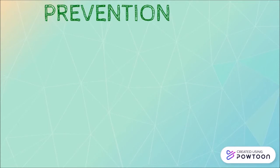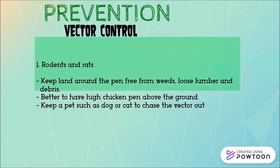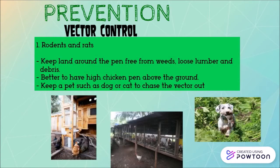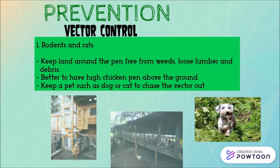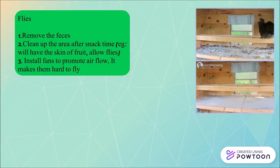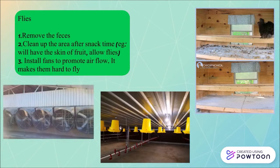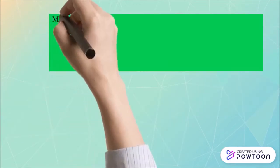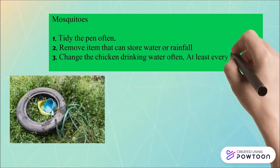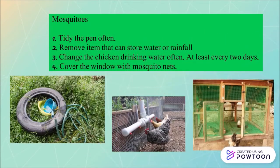Now let's look at the prevention of vector-borne diseases in poultry production. The first way is vector control. For rodents and mice, we can keep the land around the pen free from weeds, loose lumber, and debris. It is also better to have a high chicken pen above the ground. Keeping a pet such as a dog or cat to chase away the vector is one possible way too. For fly vectors, we should remove the faeces of the birds as soon as possible. Cleaning up areas after providing feed to the birds is also very important. Fans should also be installed in the pen to promote airflow, which makes it hard for flies to fly. For mosquito vectors, we should tidy the pen often, remove items that can store water, change the drinking water of the birds often, and the most important prevention is to cover the windows of the pen with a mosquito net.